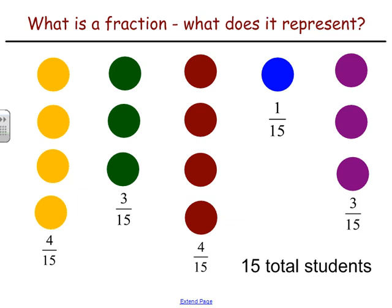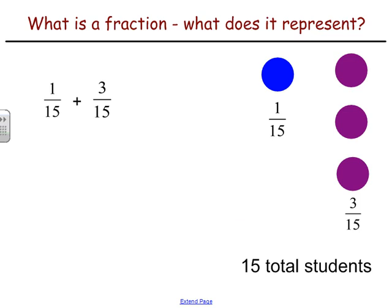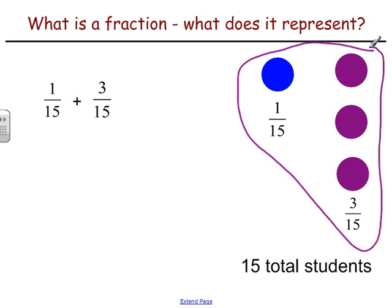Now we need to think about how we could add or subtract them. For example, what if we wanted to talk about the number of students who together have blue or purple as their favorite colors? We have one-fifteenth that has blue and three-fifteenths that has purple. So to talk about the two of them together, we add one-fifteenth plus three-fifteenths, because those are the fractions of the students whose favorite colors are blue and purple respectively.